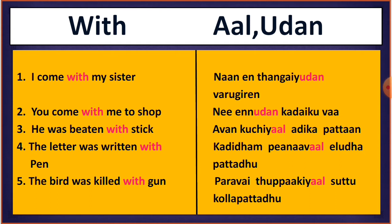The second sentence is: 'You come with me to shop.' Now you are requesting someone to accompany you to the shop. In Tamil you will say: 'Nee ennudaan kadaiku vaa.' 'Yudan' is used here to mean 'with me.'